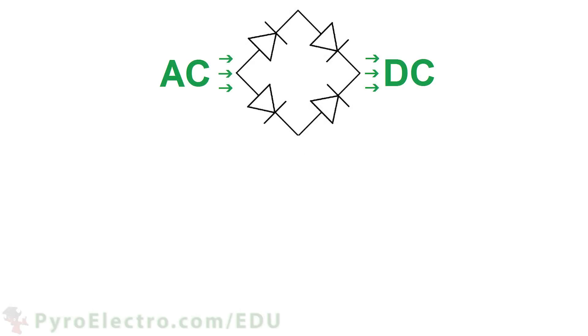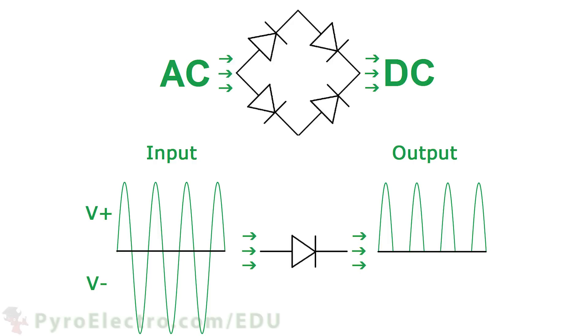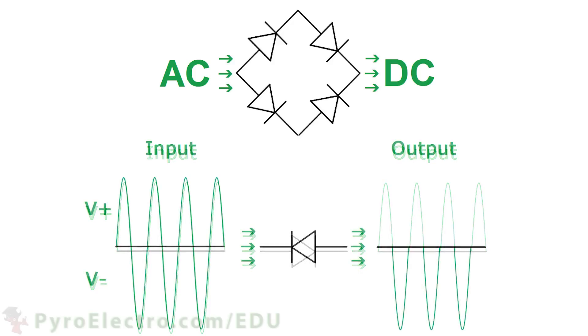In the last lesson, we used some standard rectifying diodes to build a half and full wave rectifier circuit. This meant that we could easily turn an AC electrical sine wave into DC electricity.